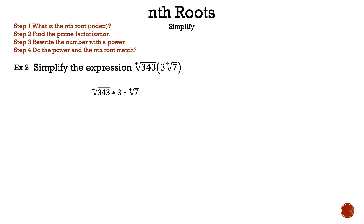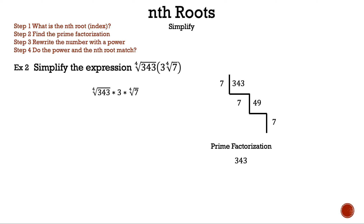Now let's find the prime factorization of 343 and seven. Luckily, seven is already a prime number, so we only have to find the prime factorization of 343. 343 is only divisible by seven — it might be useful to memorize that. Dividing 343 by seven gives 49, and 49 divided by seven is seven. So the prime factorization of 343 is seven times seven times seven, which is seven cubed.